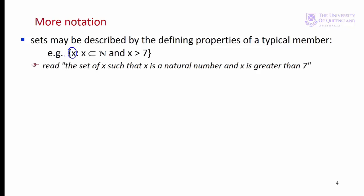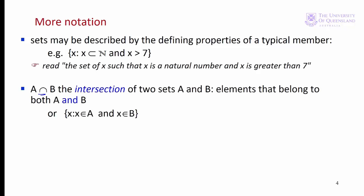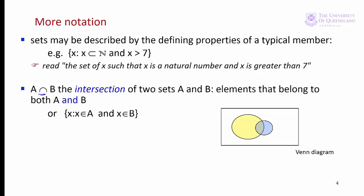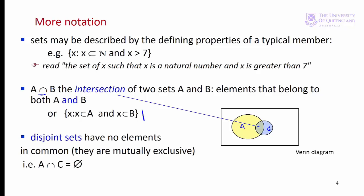Now let's look at combinations of sets. This upside-down U is the symbol for the intersection of two sets A and B. The intersection of A and B is where those two sets overlap on the Venn diagram — it's the subset of elements that belong to both A and B, shown in more formal notation here. Disjoint sets are mutually exclusive: they don't have any common elements and do not overlap on the Venn diagram. So if we have a set C there, we would say that A intersection C is the null set.